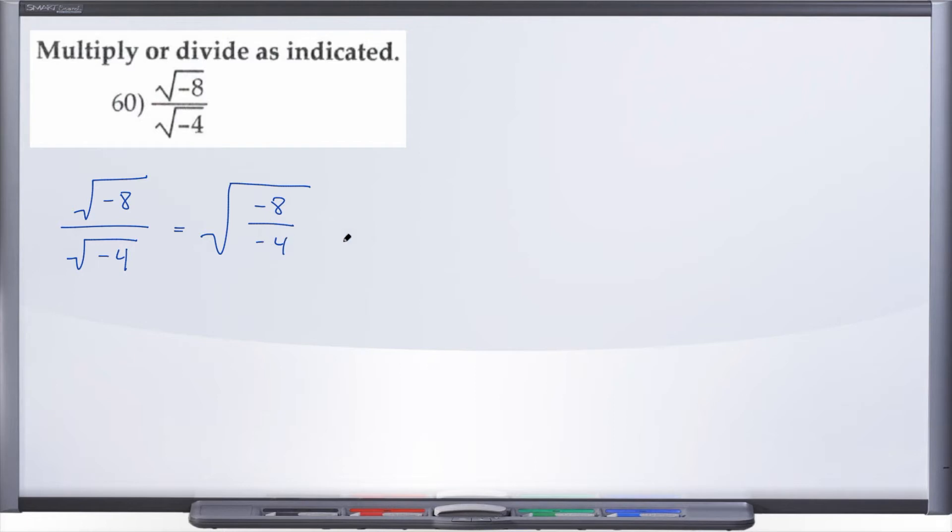Well now we're just going to use some basic simplification here and ask ourselves, what is negative 8 divided by negative 4? Well that's going to be a positive 2, isn't it?